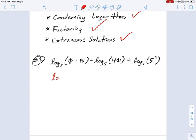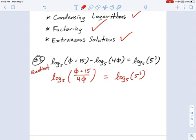I'm just going to go ahead and condense these two logarithms on the left. See, they have the same base. It's both a log base 5. So I can turn this into 5 plus 15 divided by 4φ. And on the right, I'm not changing anything for now. I'm just going to leave that log base 5 of 5 cubed. And remember, this is the quotient rule. If you need to look up how the quotient rule works, this might be a good time. We'll be using it a lot.